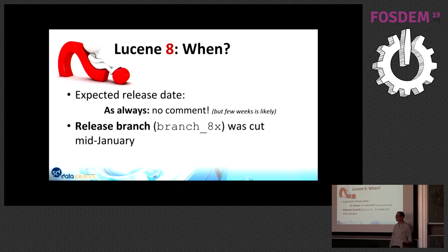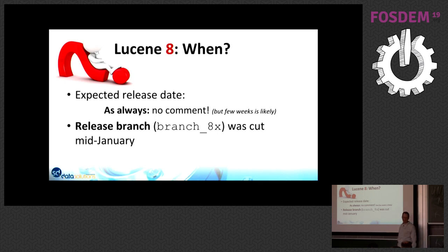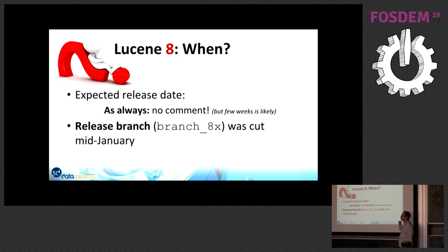The release branch for the whole 8 series was cut off in mid-January. Currently everything is committed to in most cases three branches when there are bug fixes: the master branch, which will be Lucene 9; the 8th branch; and we are also doing some additional deprecations for the Lucene 7.7 release, which will come shortly before the 8th release.